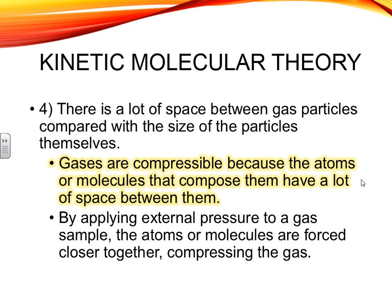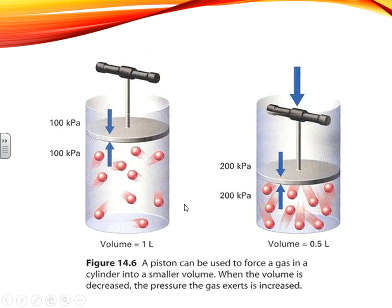Those are the four postulates of the kinetic molecular theory. This picture shows how you can force a gas to be smaller. Initially you have 100 kPa of pressure — kPa is a pressure unit, which I'll talk about in just a second. When you push this piston down, you're compressing the gas and decreasing the space between the particles, which increases the pressure. Why? Because now there's less space for the gas particles to move around, so they bounce off each other more. The more often they bounce, the more pressure it creates. So as you decrease the size of the container, the pressure increases.